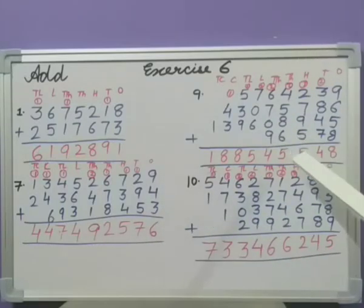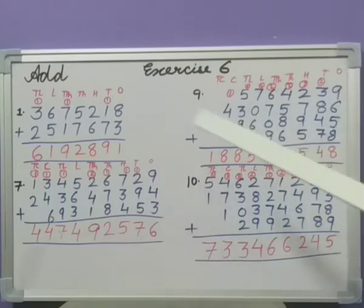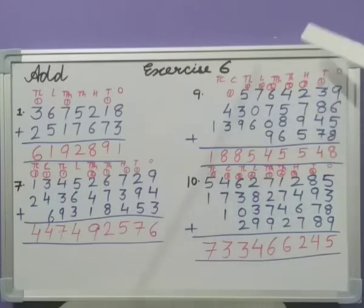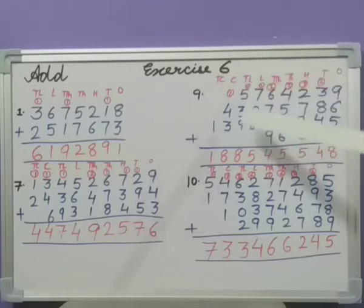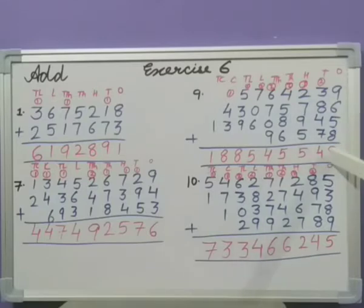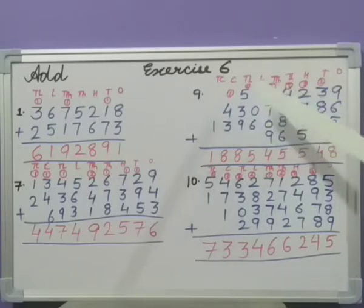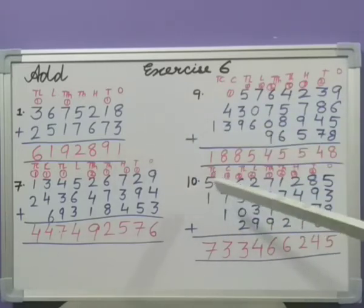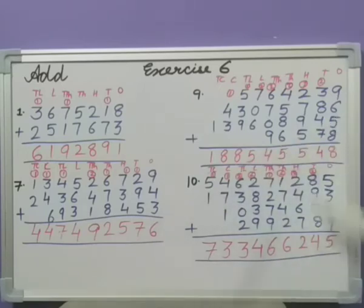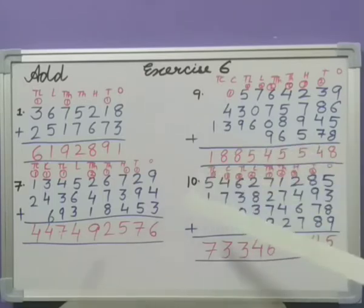Now let us come to the 9th one. Again it is same. Be very careful while adding the numbers. First add ones place numbers, then tens, then hundreds, then thousands, then ten thousands, lakhs, ten lakhs, crores, ten crores. And whenever we are adding ones place number, the carried over number will go to tens place only, the next place only. Now here when we are adding the number at tens place, the carry over will be going to hundreds place only and so on. Same with the question number 10. Again we are going to start from ones place and then carrying over number will be shifted to the next place.